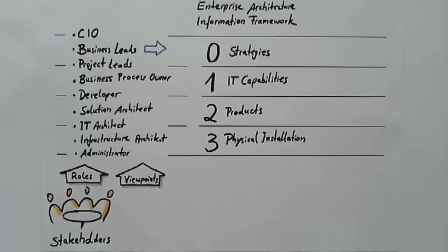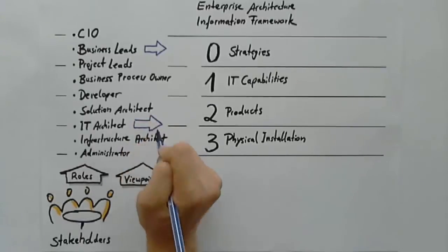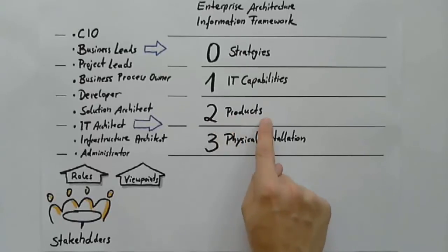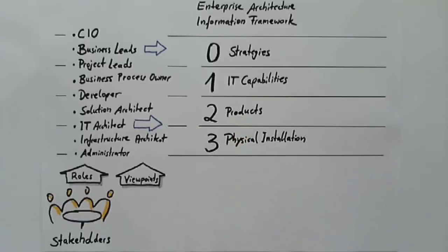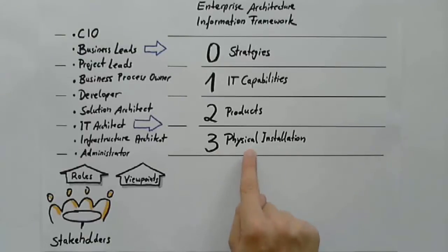There are additional roles that need to consider two levels and especially the connection between these levels. As one example, the IT architect has to understand which products need to be deployed — this is described at the products level. This role also has to understand the installation requirements of the relevant software packages and hardware boxes, however.